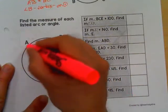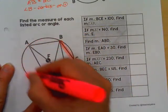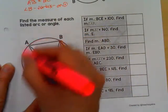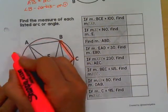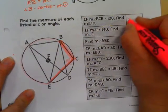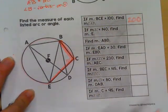EAB. They want us to find the arc that goes with that angle. Well, this angle has to be half of the arc. So that means this arc out here is going to be twice as big as the angle, or 200.